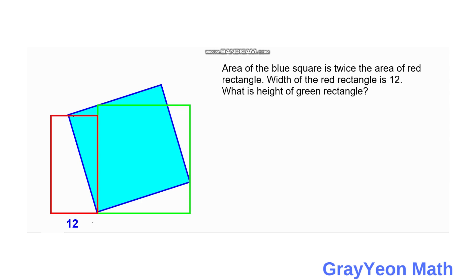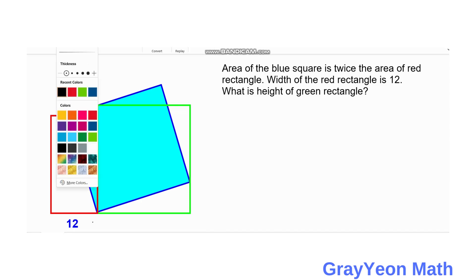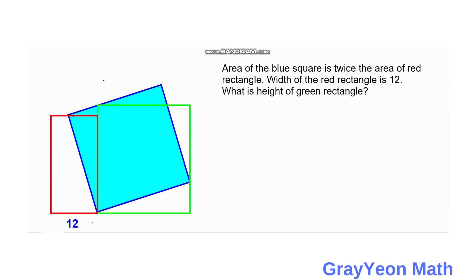The first thing we need to do is label the figure. Let us label the height of the red rectangle as A, the side of the blue square as C, and the height of the green rectangle — which is what we are looking for — as B.